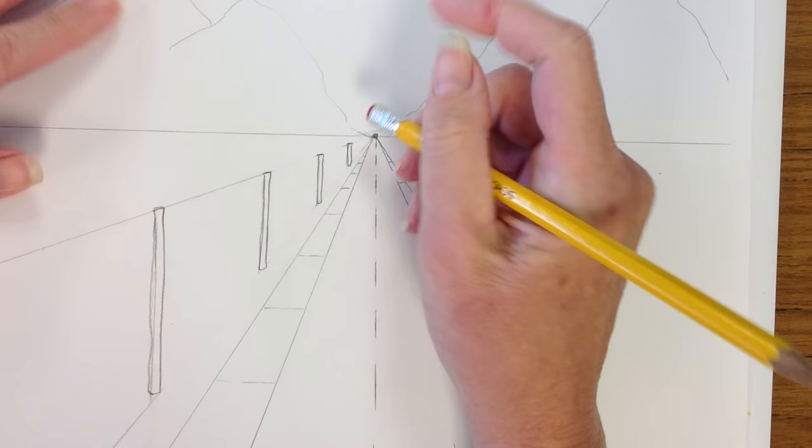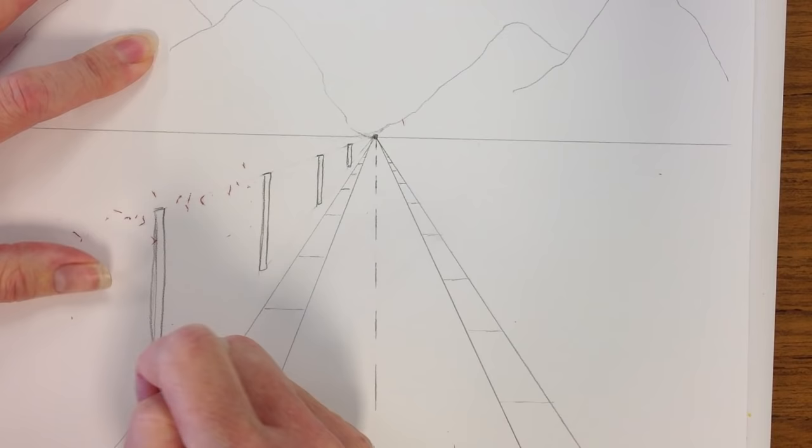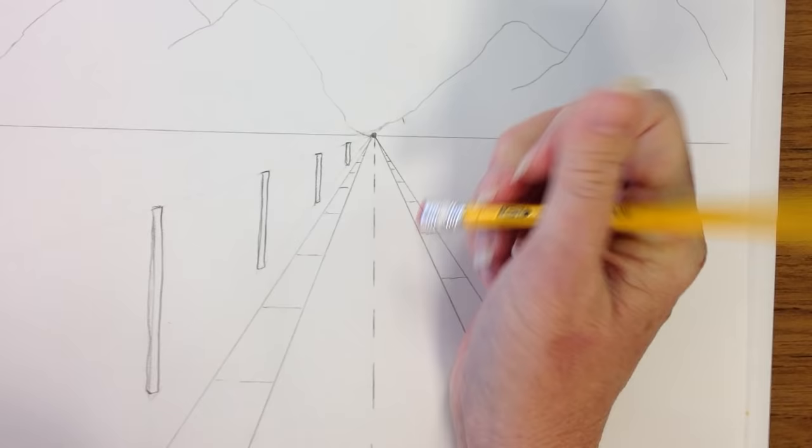And erase the top. We needed that to make sure we got our fence posts going back in the distance. But I don't need it any longer so I'm going to erase it out of there as best as I can.